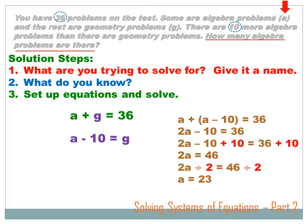We've got this equation rewritten: A plus, instead of G, A minus 10 equals 36. Now we simplify: the two A's combine to 2A minus 10 equals 36. I need to get rid of this minus 10, so I add 10 to both sides of the equation. Now it reads 2A equals 46. To get rid of the two times, I divide by 2 on both sides. 2A divided by 2 is A. 46 divided by 2 is 23.